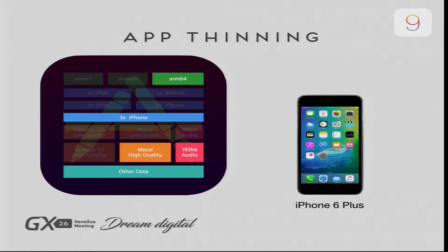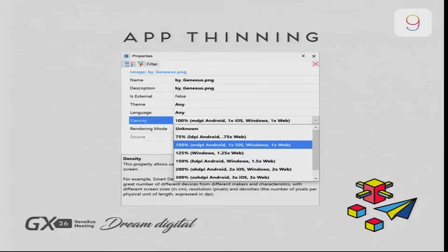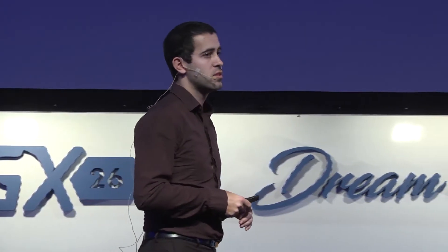In GeneXus 15, how do you support all this? It's quite simple. In the image properties, one of them is density — you state what density you require. I recommend you include all of them — 1x, 2x — because the binary afterwards is not going to be heavy; the device is going to download only what is required. We also added in GeneXus 15 support for an environment where you have multiple themes in your application, for example a theme for iPhone and another for iPad, with several options depending on the device.